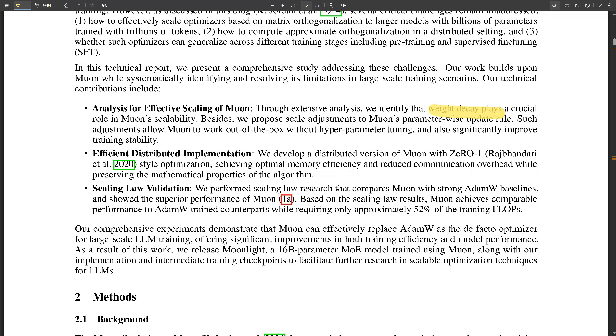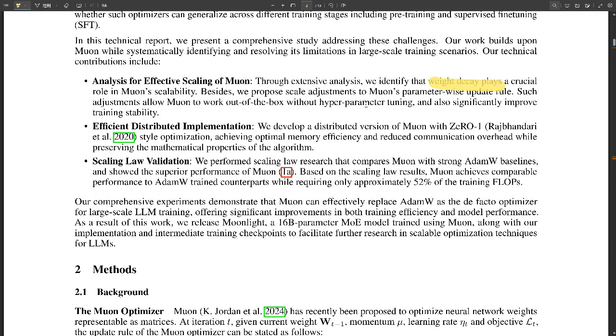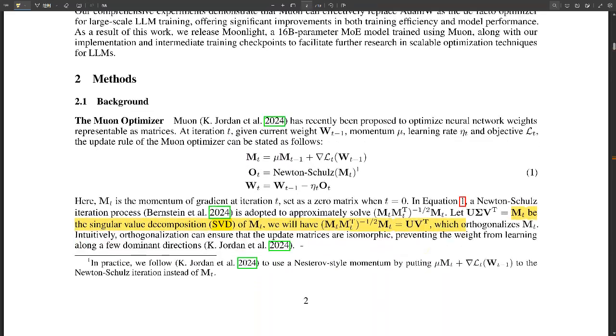Yeah, it gets expensive pretty quickly. And so that's where optimizers come in. They help these models learn more efficiently from the data. It's like a coach guiding a team to victory. They're kind of tweaking all these parameters in the model to minimize the errors and really boost the performance. And until recently, the go-to optimizer for training LLMs was AdamW. It was the reigning champ, so to speak.